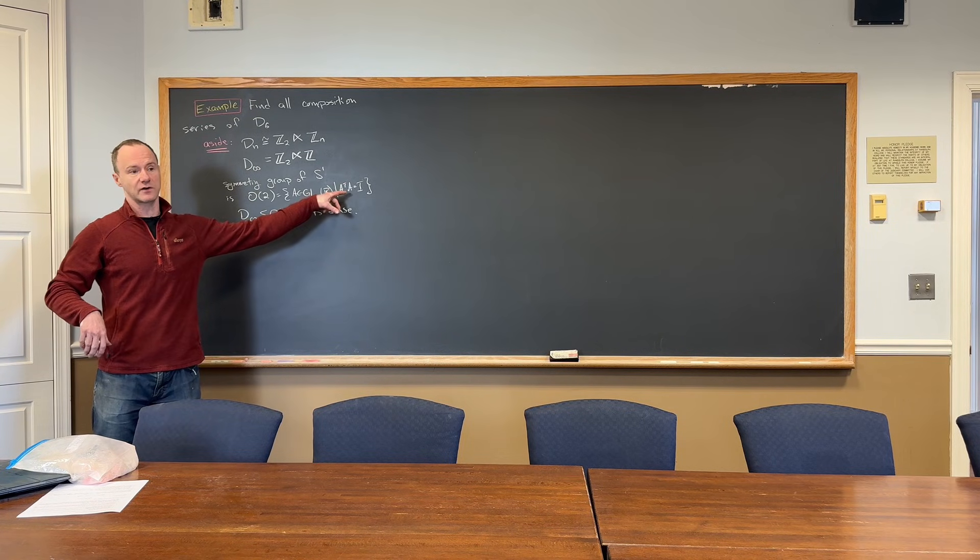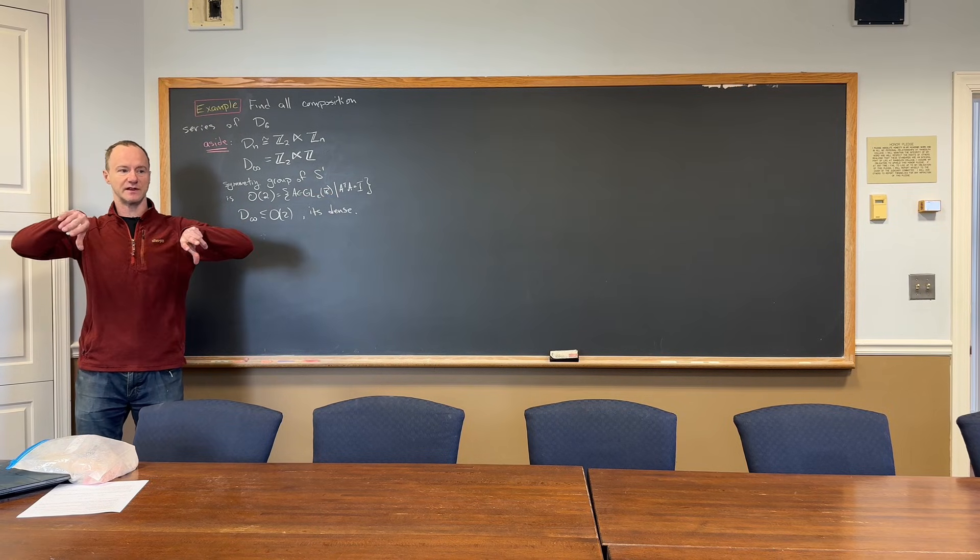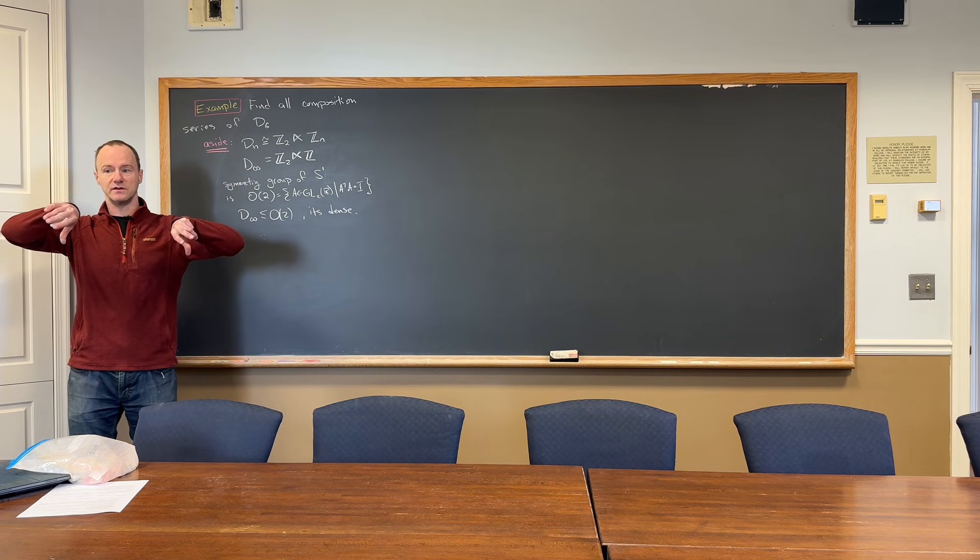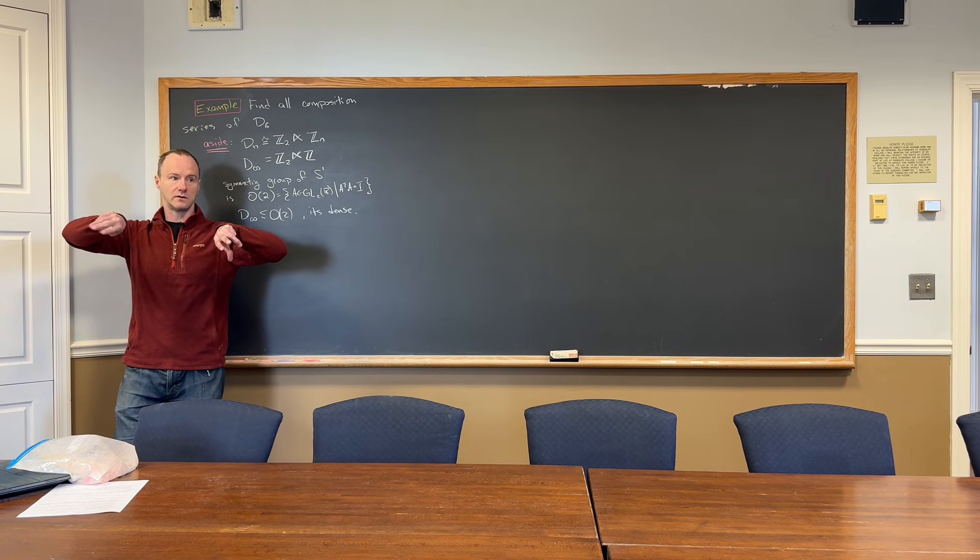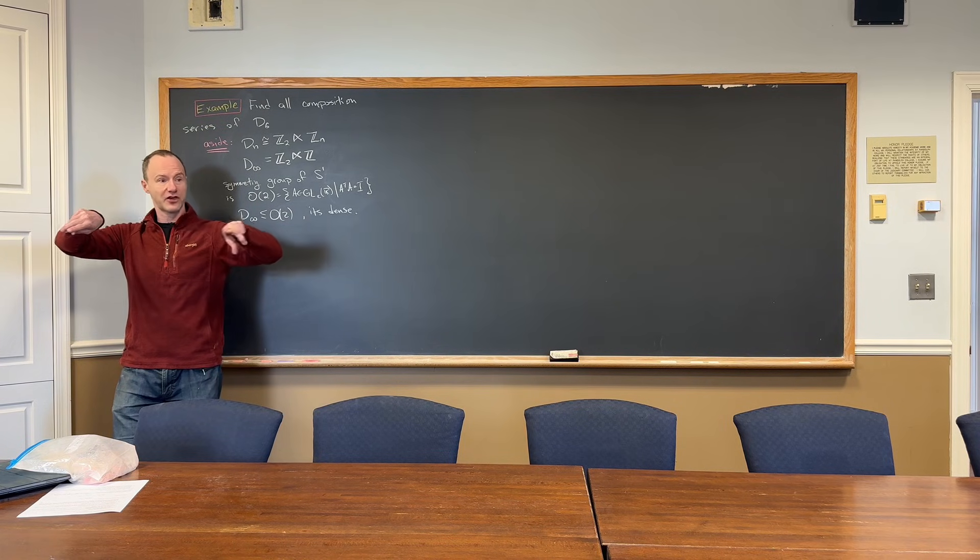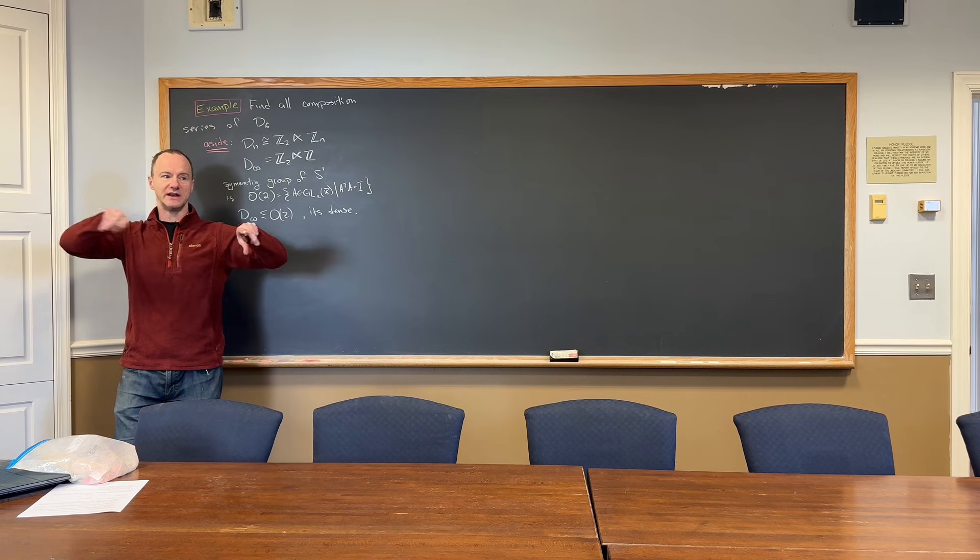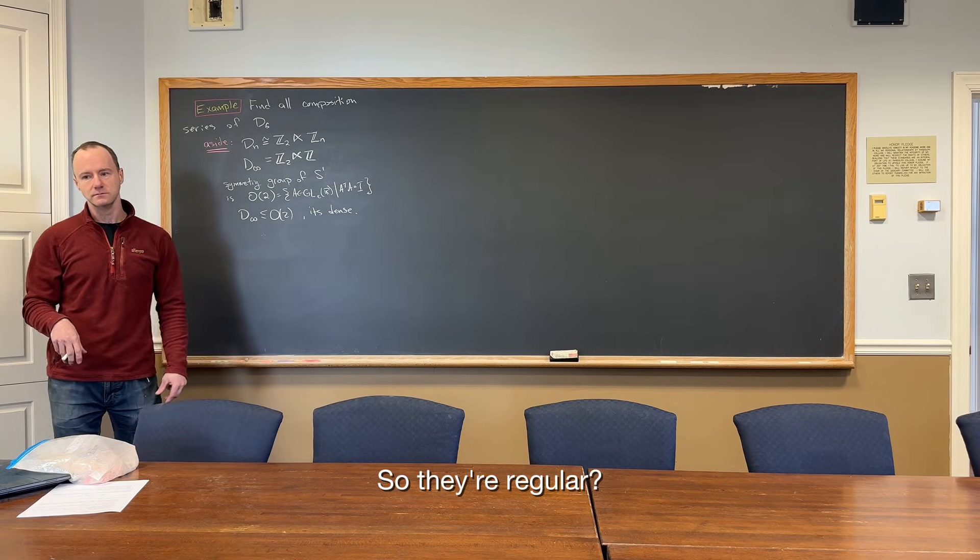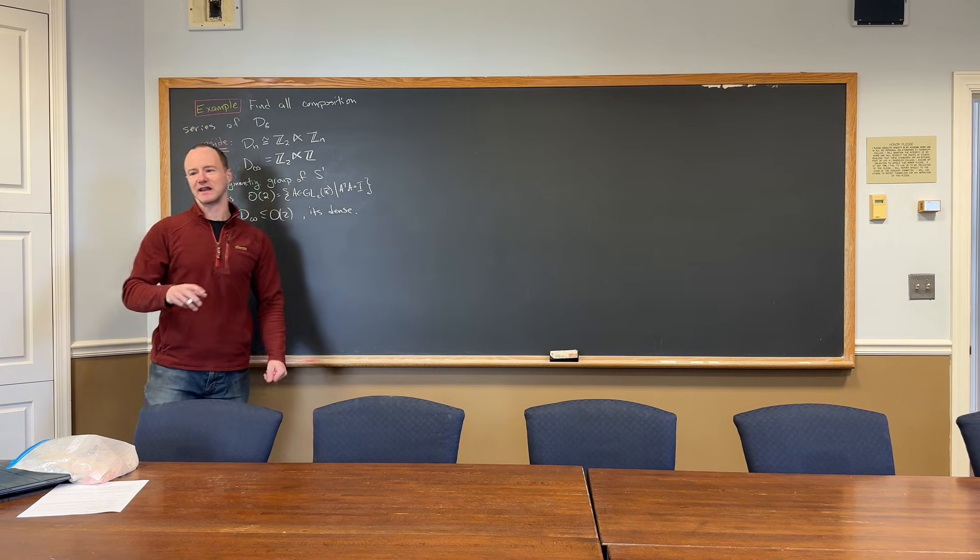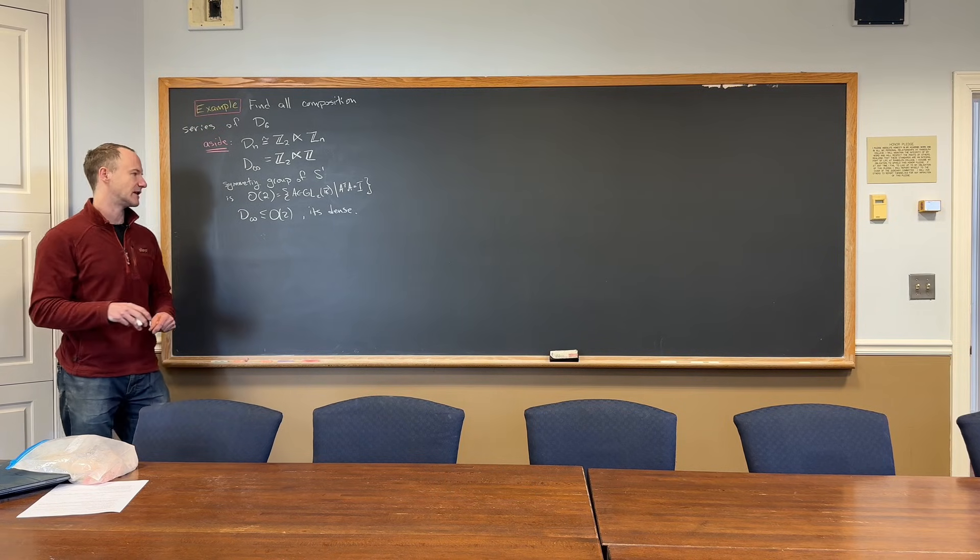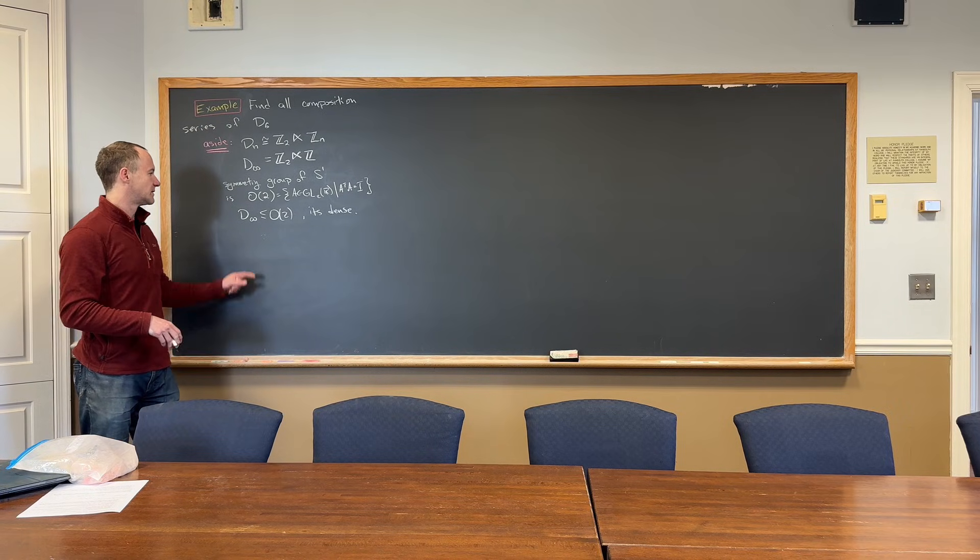So, the transpose being equal to the inverse means that the determinant is equal to the reciprocal of the determinant. That happens when the determinant is one or negative one. So, the determinant can be one or negative one. But it can't be anything between one and negative one. But that means that there's no path in the orthogonal group from determinant one to determinant negative one. They're disconnected components. It's a disconnected space.